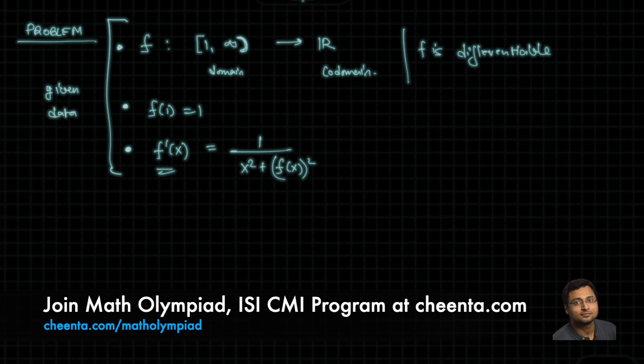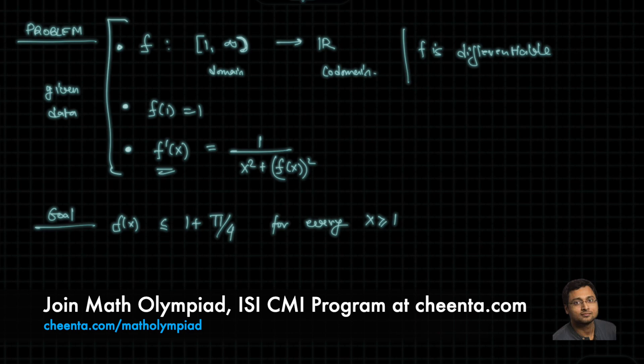And our goal is to show that f of x is less than or equal to 1 plus pi over 4 for every x greater than or equal to 1. That's our goal.